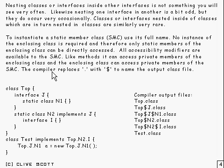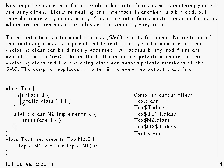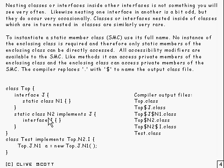What happens when you do the compilation is that the whole thing gets flattened out and unpacked. Where there would be dots, you get dollar signs replaced. So for example, if you want to declare that 'test' implements that interface, what you do is put 'test implements Top.N2.I' — that is the full name of that interface.